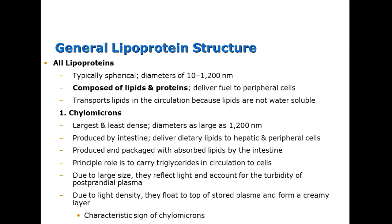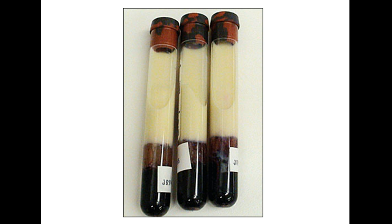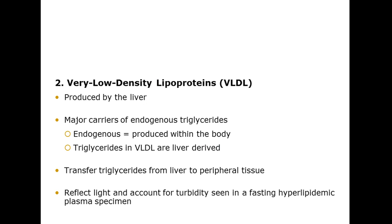The first lipoprotein we look at is a chylomicron. It is huge but not very dense — up to 1200 nanometers. It's produced by the intestine and carries triglycerides specifically from your intestines to your liver, where they can be turned into other types of lipoproteins. Chylomicrons are so light that they float to the top of stored plasma and form a creamy layer. If someone has very high triglycerides, the serum looks very milky and creamy — if hemolyzed, it actually looks like strawberry milk.